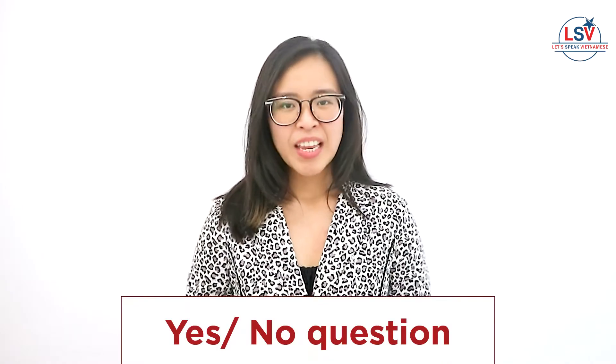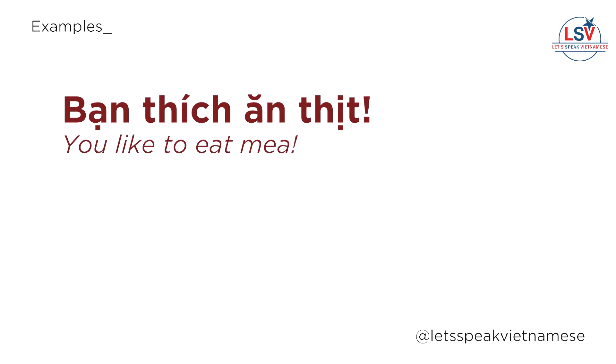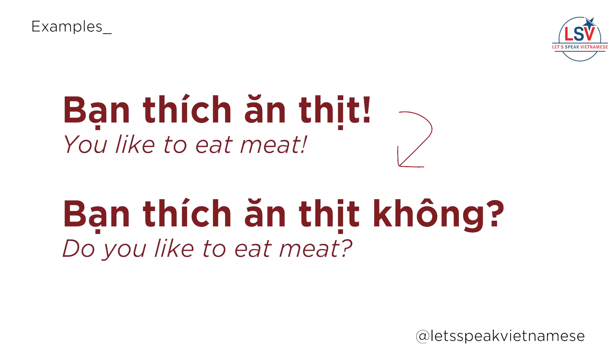The last question word for today is không, used for yes/no questions — a type of question you have in English too. It's super easy: you don't have to switch the sentence order. Just repeat the statement structure and add không at the end. For example, bạn thích ăn thịt means 'you like to eat meat,' and to make it a yes/no question, you just add không: bạn thích ăn thịt không? For pronunciation, make a falling tone — it's not không with a flat tone, it's không.